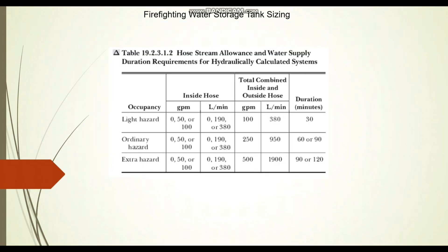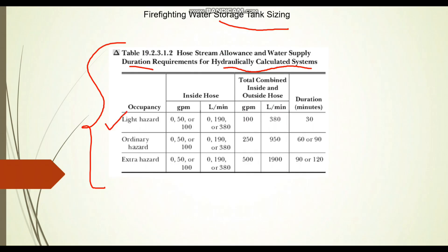Now we are going to find out the storage tank sizing for the firefighting system. This table is taken from NFPA 13, showing the hose allowance and water supply duration requirements for hydraulically calculated systems. Different hazard levels are given: light hazard, ordinary hazard, and extra hazard. The required storage duration is 30 minutes for light hazard, 60 to 90 minutes for ordinary hazard, and 90 to 120 minutes for extra hazard.